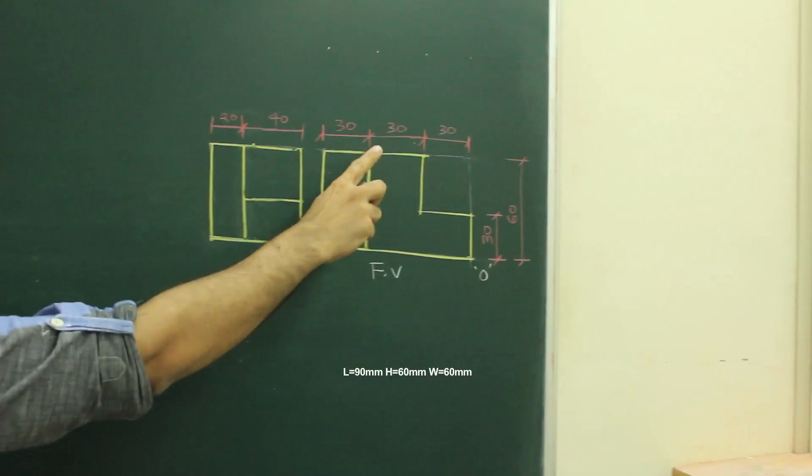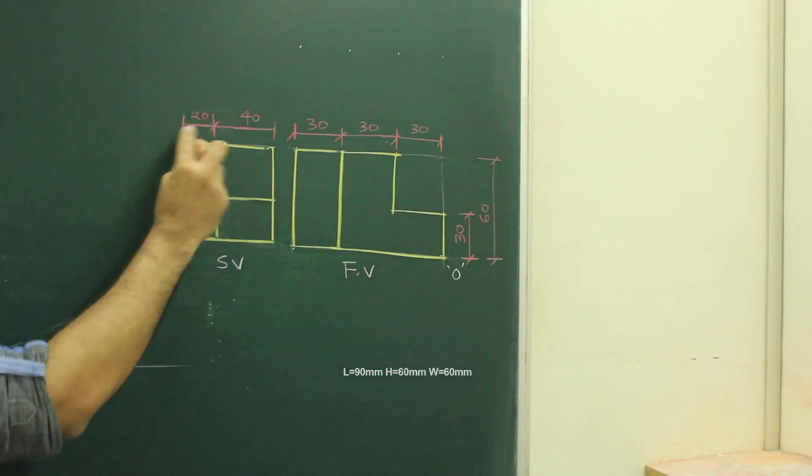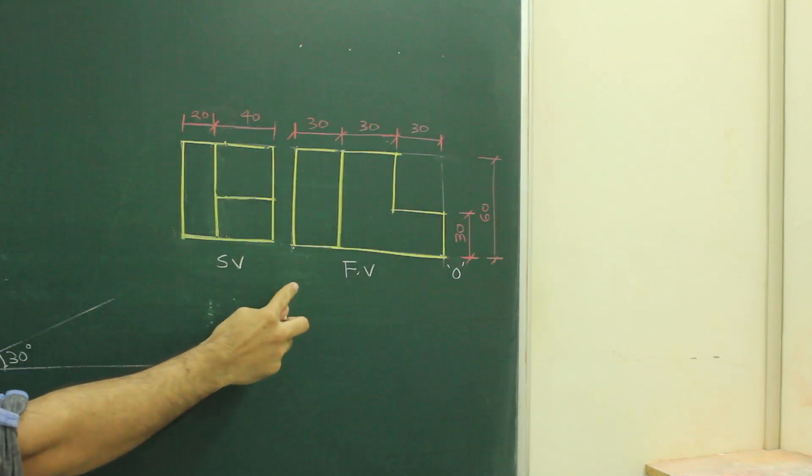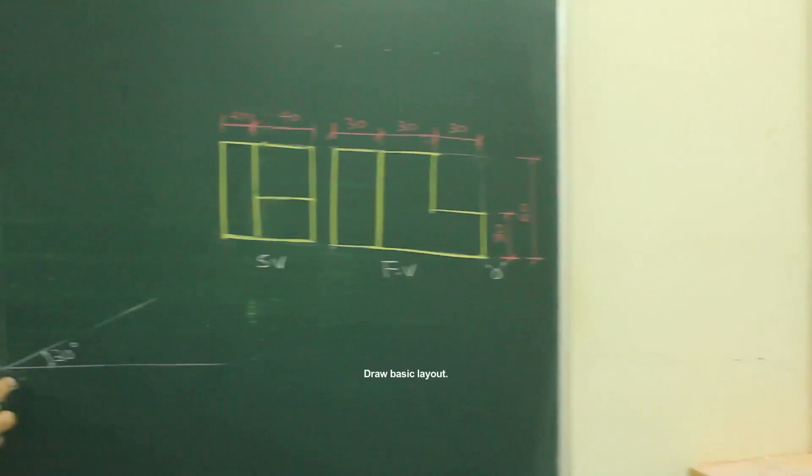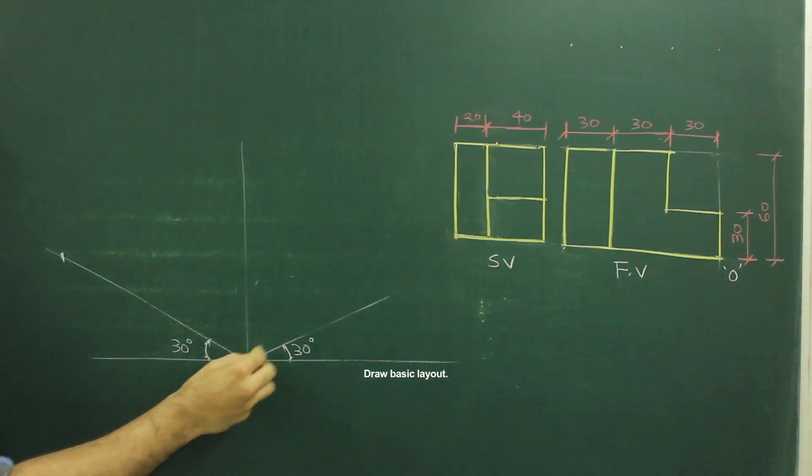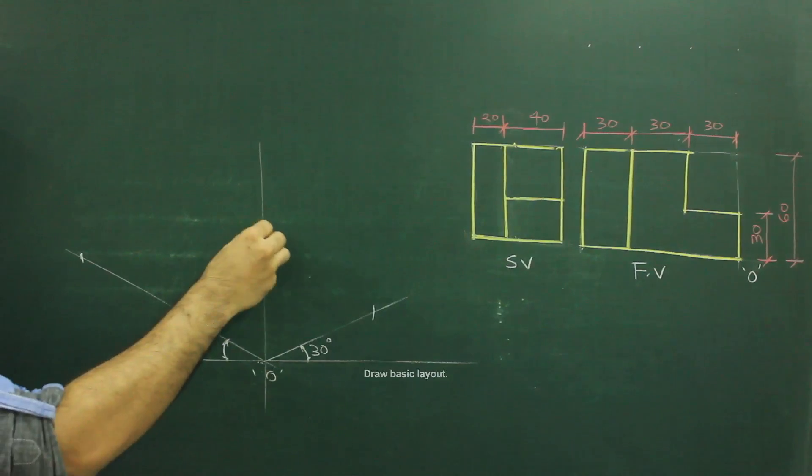In this sum, length is 90, height is 60 and width is 60. They have given 90 on the left side of the origin. So we will write O and take 90 on this side, 60 on the other side, and height is also 60.